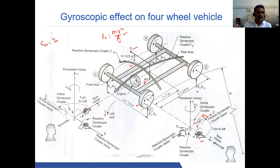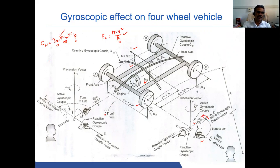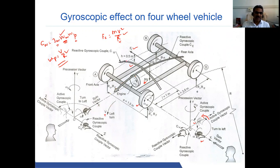The gyroscopic couple of the wheel is: Cw = Iw × ωw × ωp, where Iw is the moment of inertia of the wheel, ωw is the angular velocity of wheel rotation, and ωp is the angular velocity of precession. We know the equation ωp = v/R, so we can calculate the angular velocity of precession, which creates the couple.